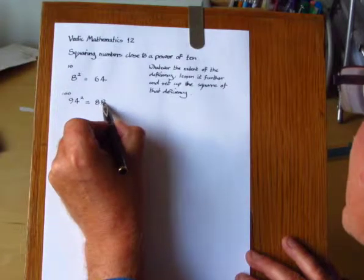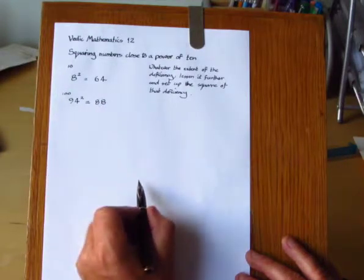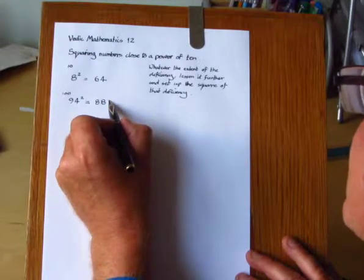That's 94 take away 6, it's 88. And then we put down the square of the deficiency. 6 squared is 36.